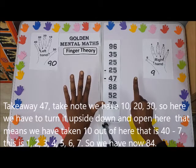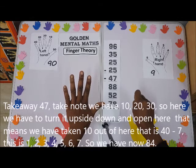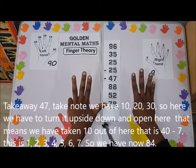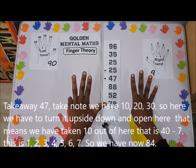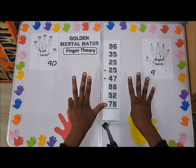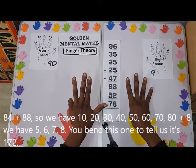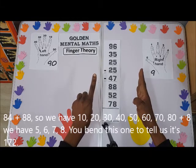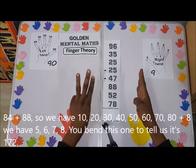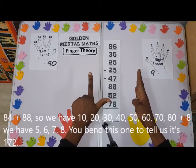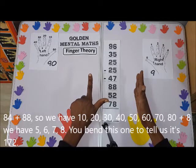Minus 7 of 10: 1, 2, 3, 4, 5, 6, 7. So we have now 40, 50, 60, 70, 80, plus 8. We have 5, 6, 7, 8.